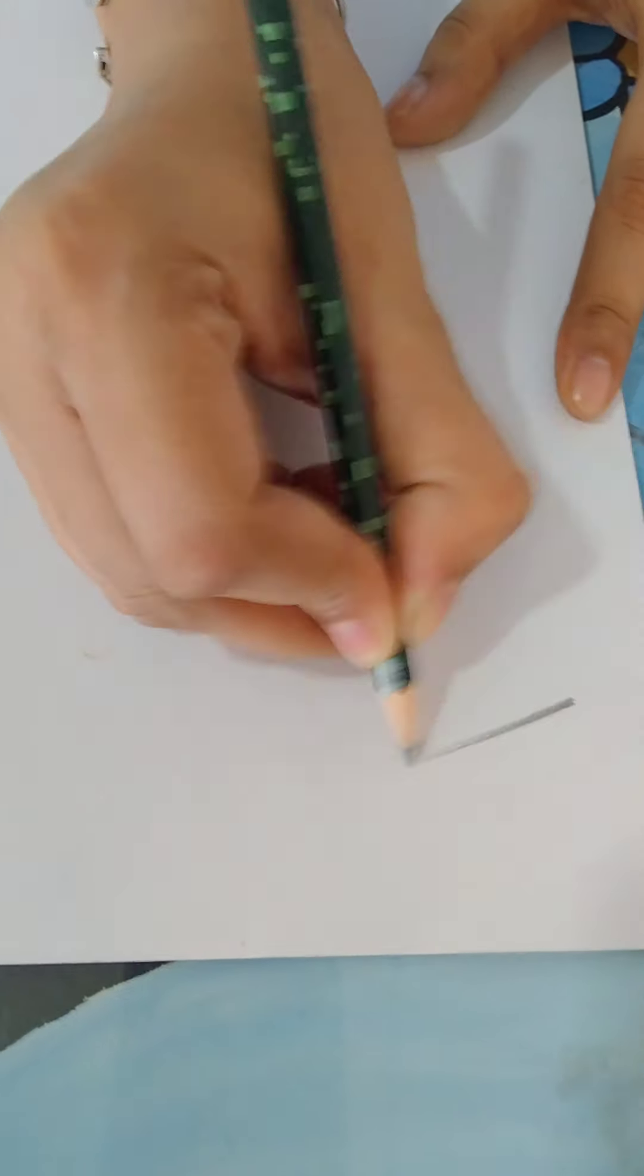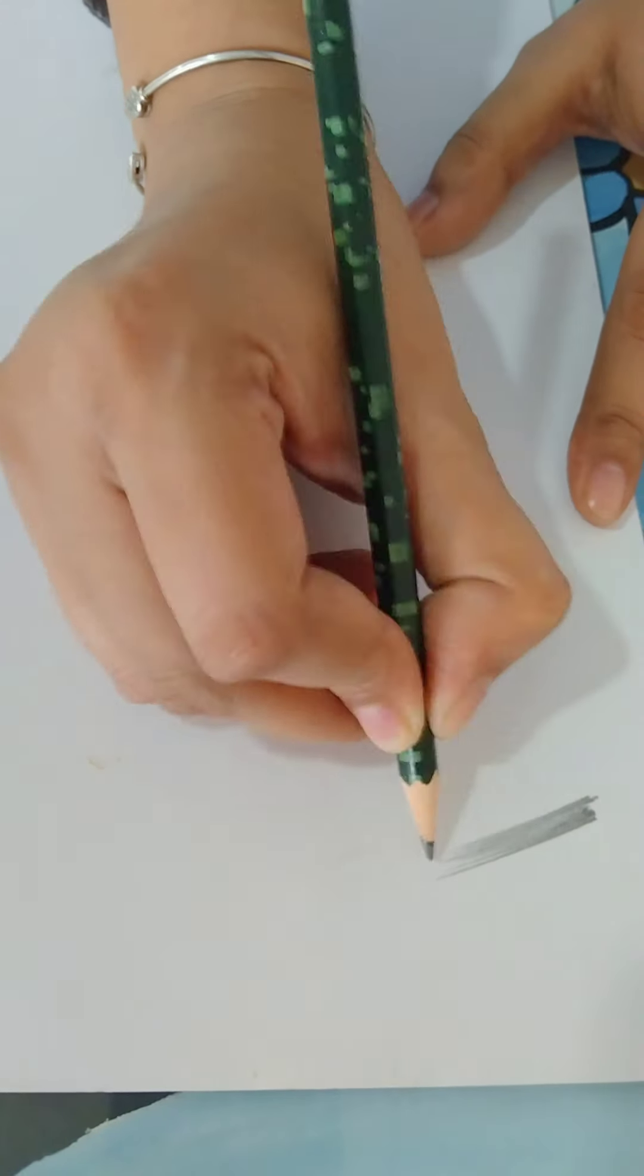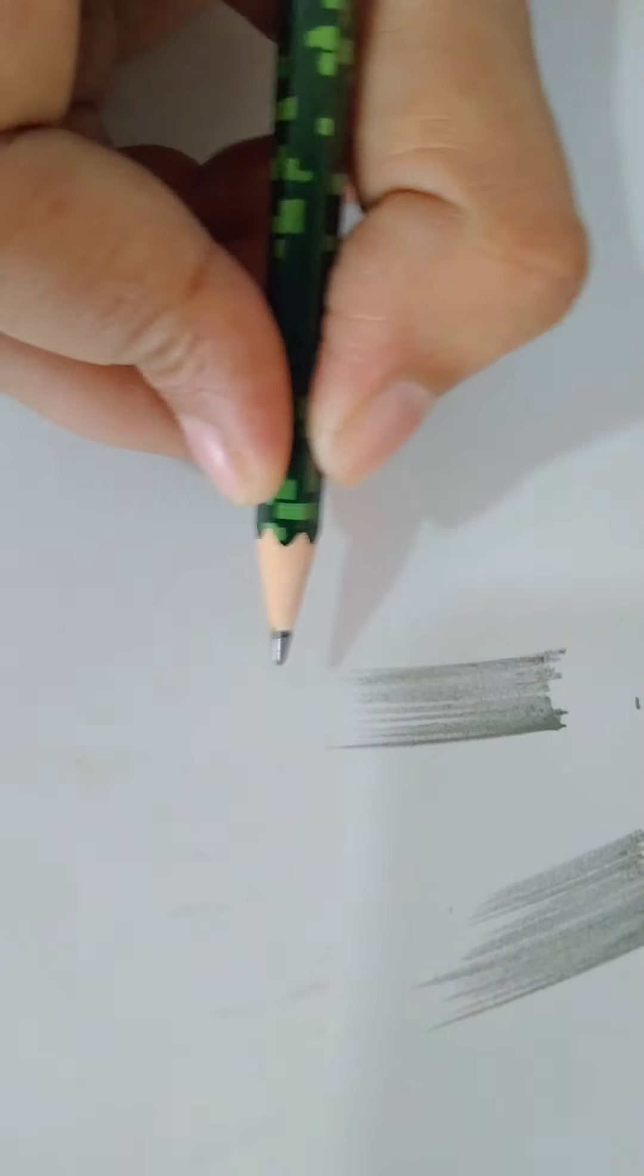So first of all, a small section of the drawing. Smudge it in the following manner. You can see dark to light smudge. First step is dark to light gradation is obtained by decreasing the pressure of the pencil.